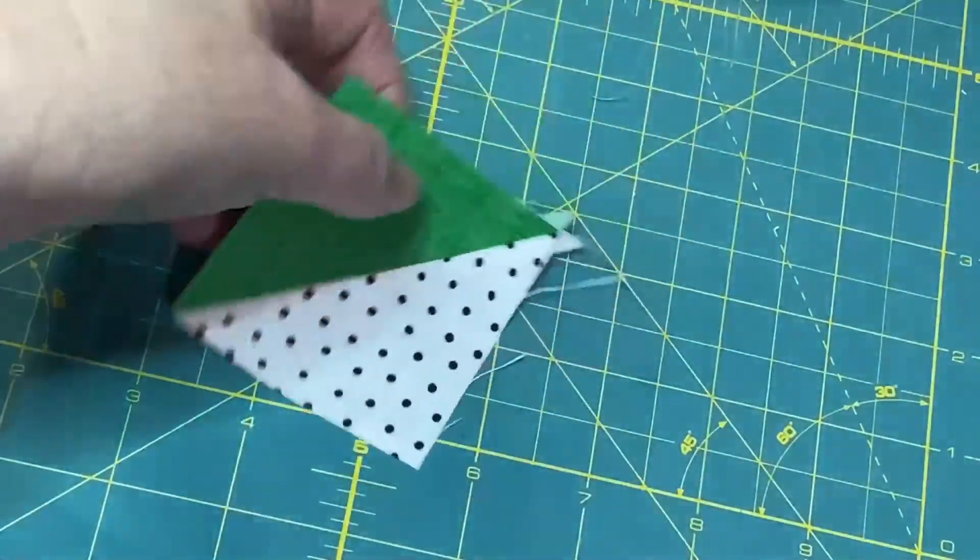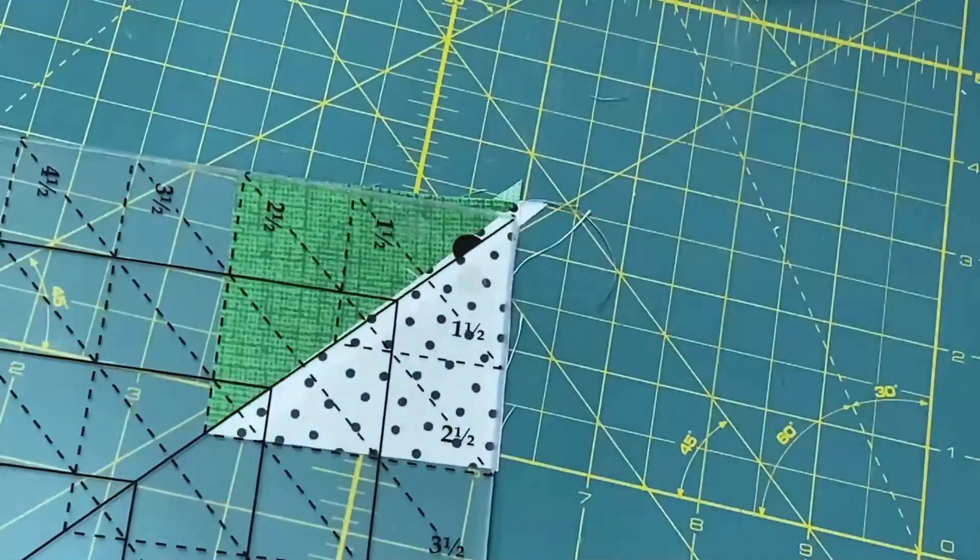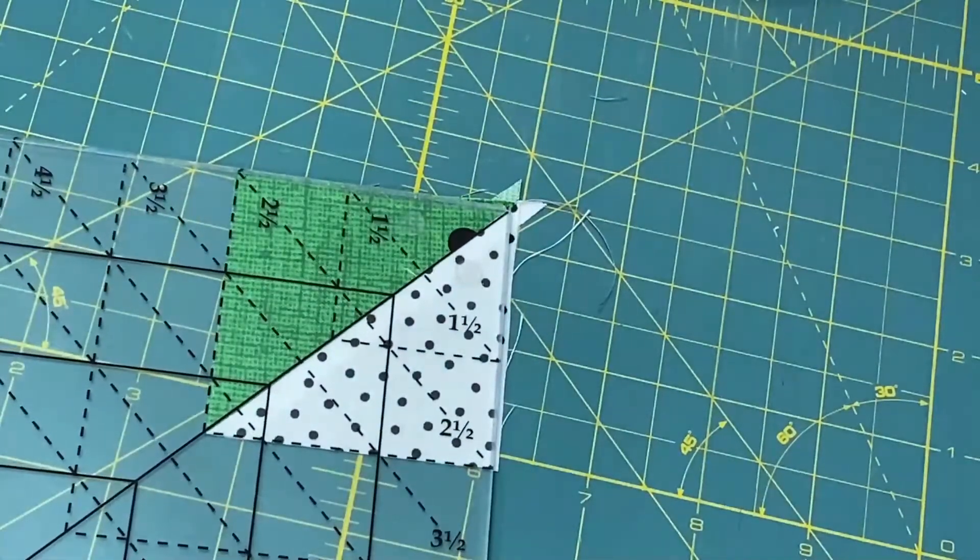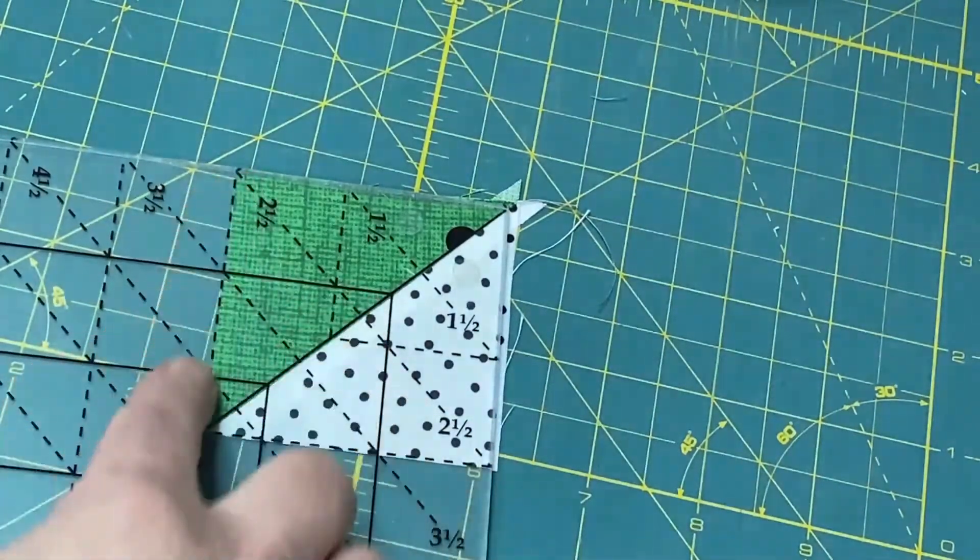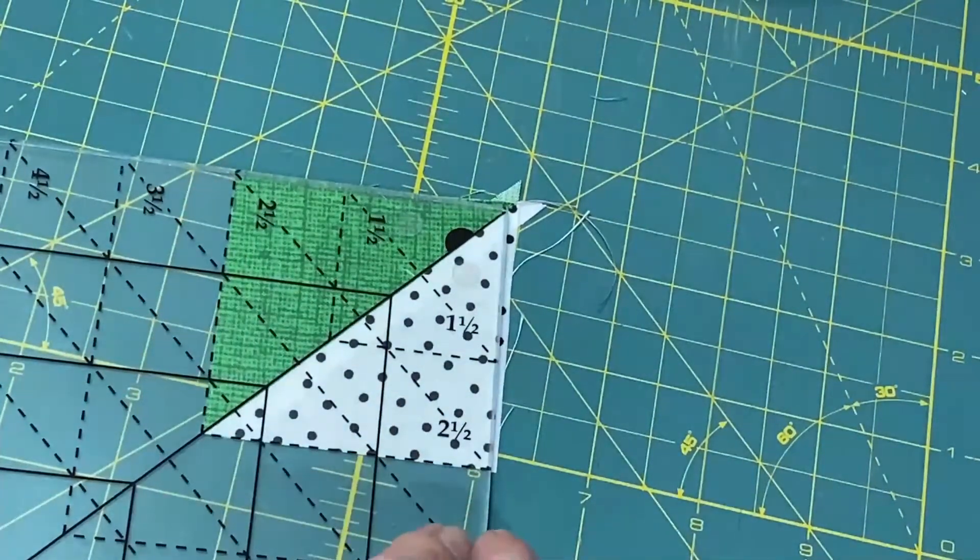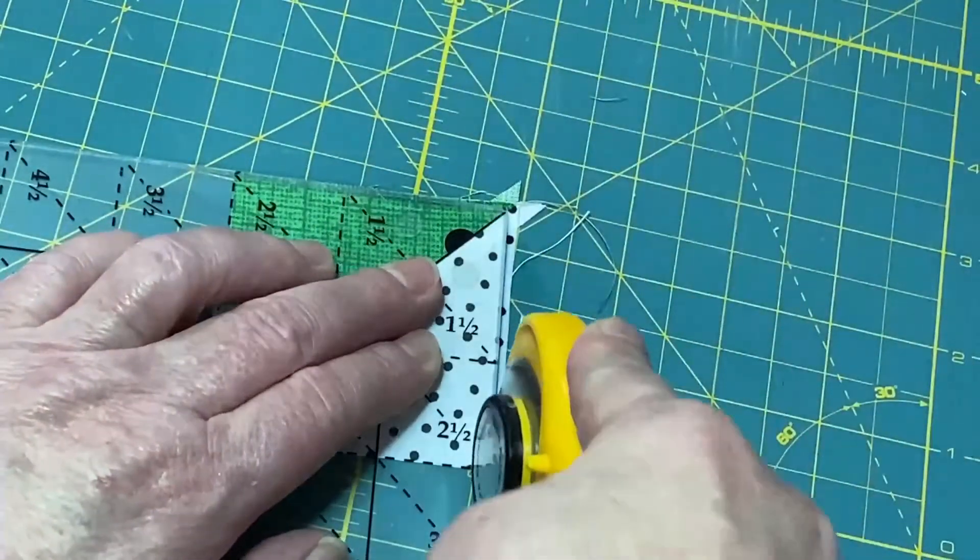I'm going to rotate that block or unit, and again, I'm going to lay the Tucker Trimmer on top of that half-square triangle unit, again matching that 45-degree line, and now my trimmed edges line up with my desired size, and I'm going to trim any overage.